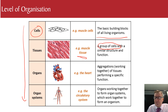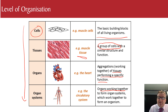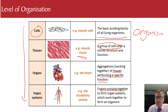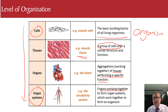The pattern carries on: an organ is where you've got a group of tissues performing a specific function. Then for the organ system, you've got organs working together to perform a particular function. Sometimes an extra level is added, which is the organism — where you've got lots of organ systems working together to perform a particular function.